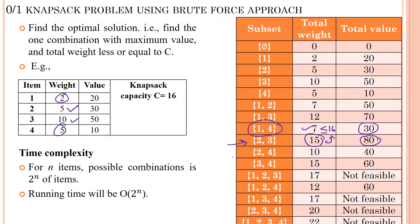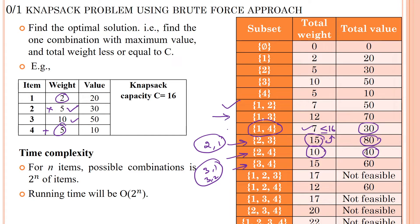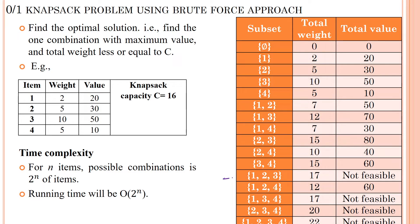For 3-item combinations: subset 1,2,3 gives weight 17 which is not less than or equal to 16, so this subset is not feasible. Subset 1,2,4 gives weight 12 and profit 60, which is feasible. Subset 1,3,4 gives weight 17, which is again not feasible since the knapsack capacity is 16. Subset 2,3,4 gives weight 20, which is also infeasible.